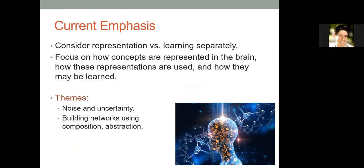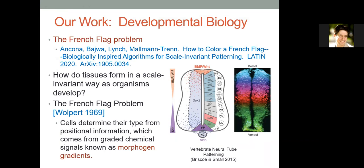Currently, we're looking at representation separately from learning the representations. We focus on how concepts are represented in the brain, how the representations get used, and separately how they are learned. But recurring themes are tolerating noise and uncertainty, and building networks using composition and levels of abstraction, as we do in distributed computing theory.